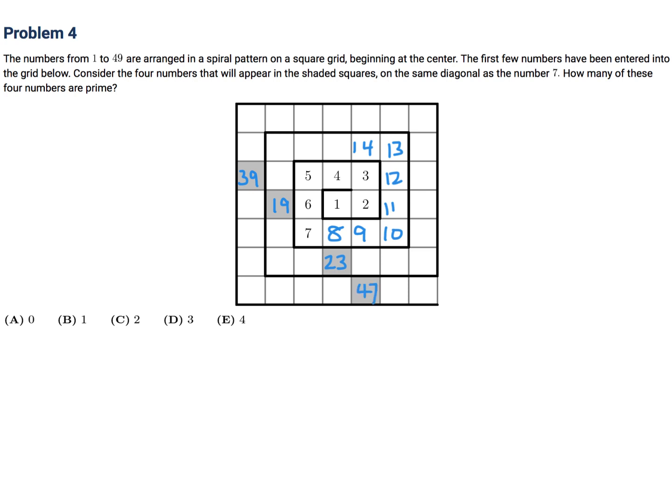Now they're saying, of those four numbers that entered into the shaded boxes, which one are prime? Well, 19 is a prime number. 23 is a prime number. 39 is not a prime number because it's divisible by 3. 47 is. So 3 of those are primes. And therefore, the answer would be D.